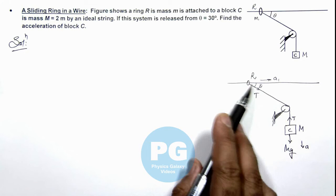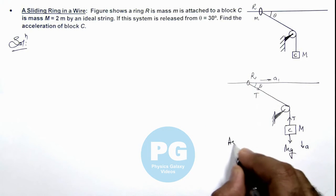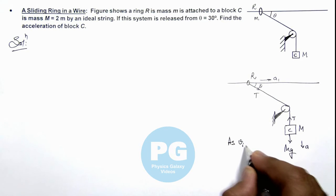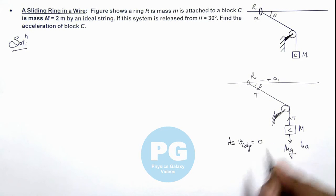And as string is starting from rest, we can write v initial of ring is equal to zero. We can have ay1 cos theta is equal to ay.